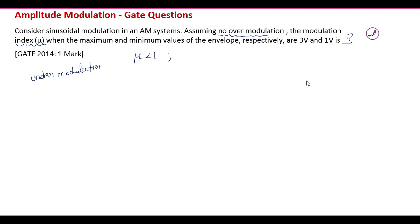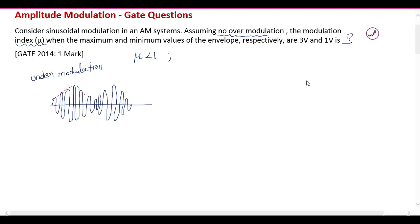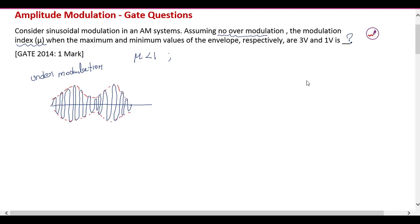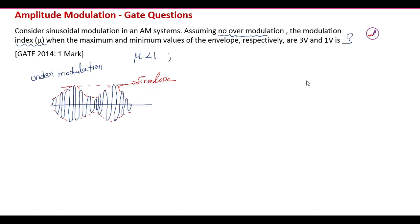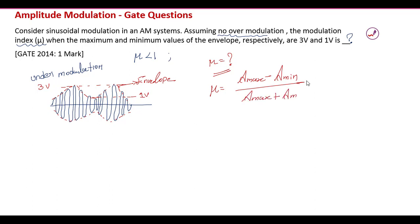Under no over-modulation, the amplitude modulated wave has no zero crossover. As given in the question, the envelope has a maximum value of 3V and a minimum value of 1V. To calculate the modulation index, we use the formula: μ = (A_max − A_min) / (A_max + A_min).